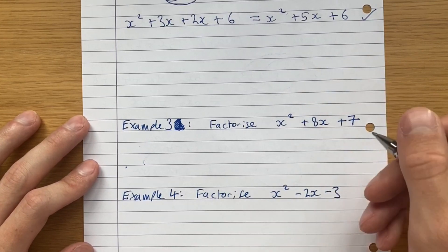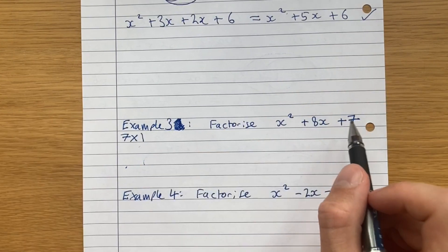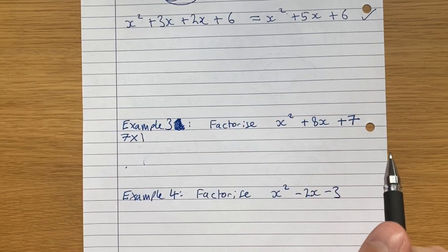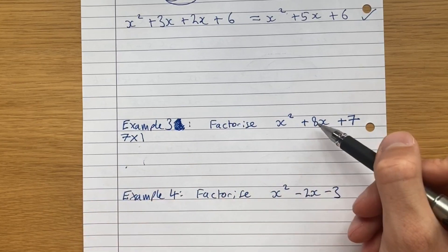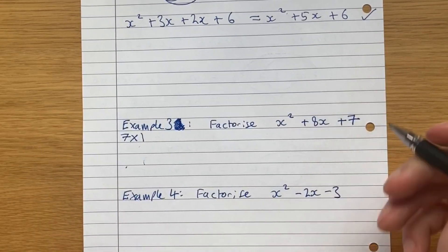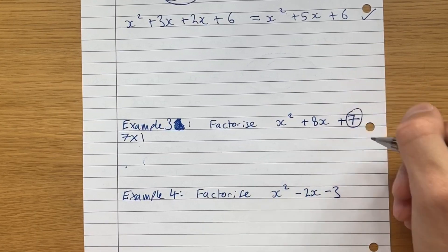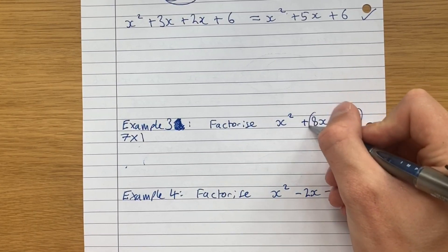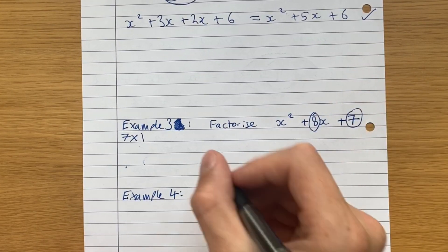And quite fortunately, 7 plus 1 is equal to 8. So that satisfies both criteria. It satisfies the two numbers that multiply together to give us 7 and two numbers that add together to give us the 8. So that means, and because again, there's only plus signs and there's a 1 in front of the x,